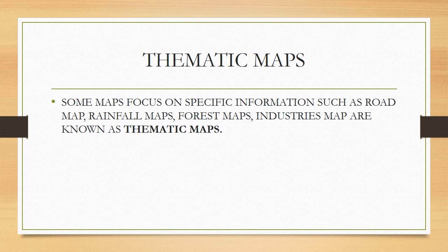The last type of map that we are going to deal with here is the thematic map. When you hear the word thematic map, keep in mind the word theme. Some maps focus on specific information such as road maps, rainfall maps, forest maps, and industry maps — these are known as thematic maps. Suppose you need to draw a map of our state showing only forests, where some districts have more forest and others have less, or some districts have more rainfall and some less. Maps drawn on certain themes like roads, rainfall, forest, or industries are called thematic maps.